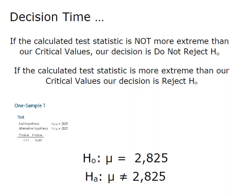Now it's decision time. Remember, if my calculated test value is not more extreme than our critical value, our decision is do not reject H₀. But if we have a calculated test value more extreme than our critical values, then we will reject H₀.